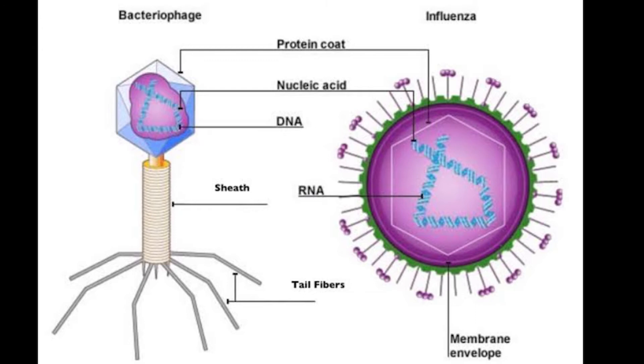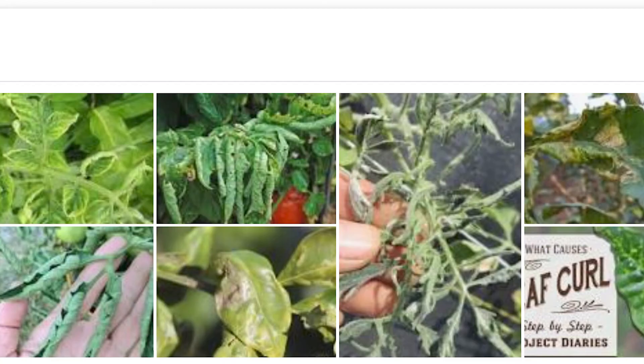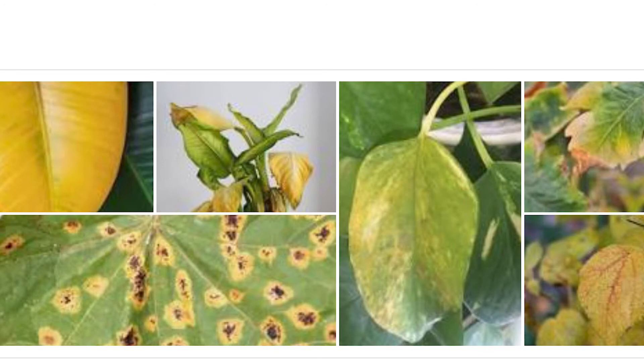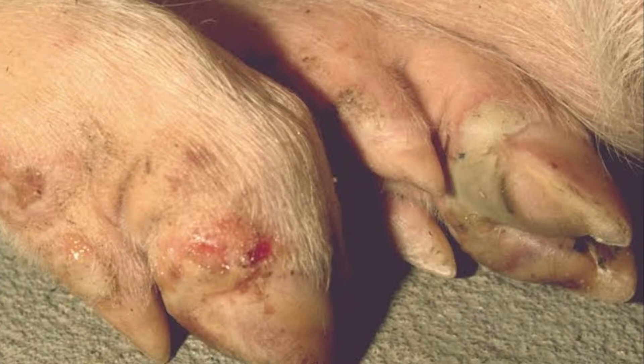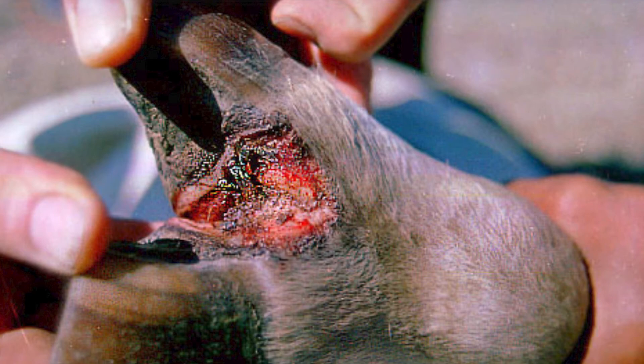Viruses cause disorders in plants like leaf curling, yellowing of leaves, and mosaic formation. In this diagram you can see how they cause curling and yellowing of leaves in a number of plants. In animals, they cause diseases like foot-and-mouth disease, swine flu — observed in a number of birds — smallpox, mumps, herpes, and the common cold. All of these are caused by viruses. Viruses are the causative agents of many diseases in humans.